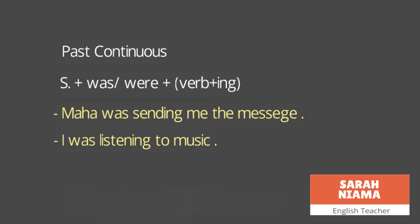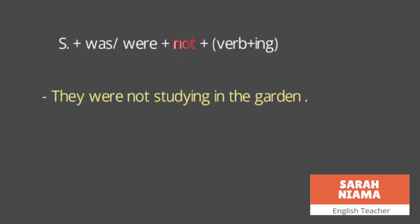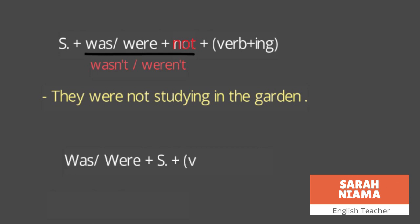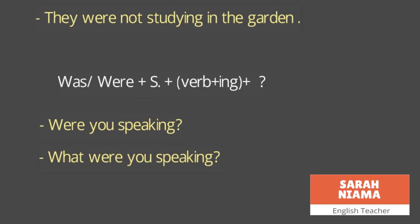The negative rule for past continuous is: subject plus 'was/were' plus 'not' plus verb plus 'ing'. Example: 'They were not studying in the garden' — 'they' is the subject, 'were' is the verb, 'not' is the negative, 'studying' is 'study' plus 'ing', 'in the garden' is the complement. We can also say 'wasn't' or 'weren't'. The question rule is: was/were plus subject plus verb plus 'ing' plus question mark — like 'Were you speaking?' or 'What were you speaking?'